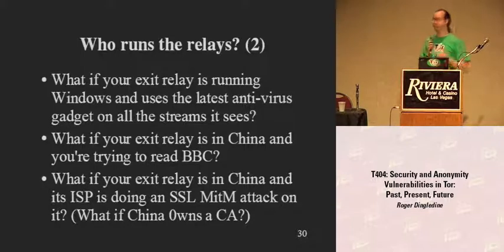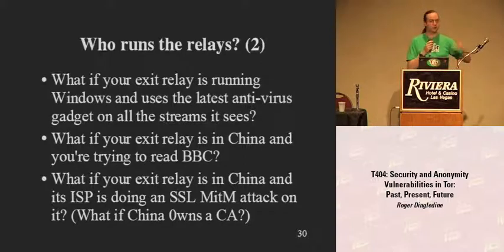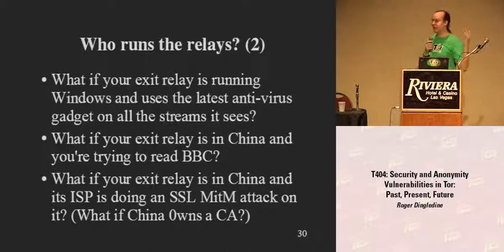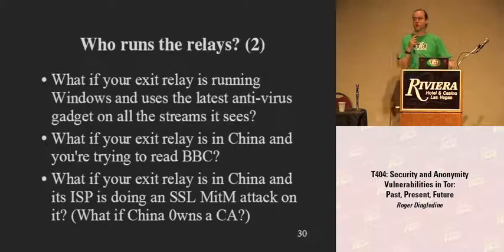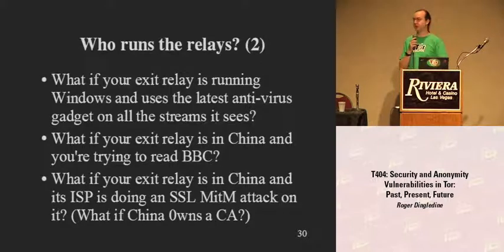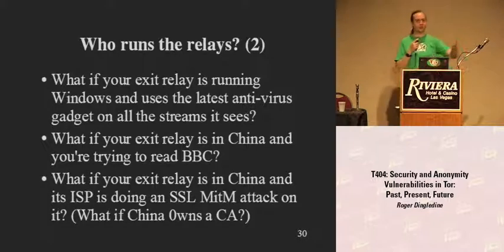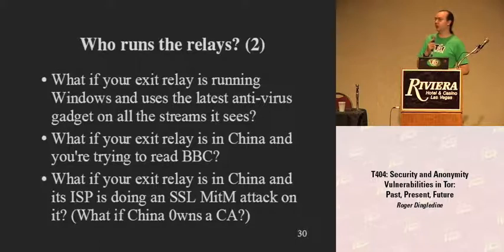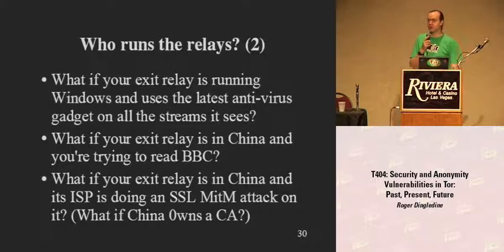I've been hearing rumors that China is looking to buy one of the roughly 200 certificate authority keys that Firefox trusts — many of which went out of business in 2000 but are still in the trusted CA list. Once they do, they'll be able to do SSL man-in-the-middle attacks and your Firefox won't pop up any warning. What happens if someone who runs an exit node gets hold of one of these official CA keys? Now they can spoof the whole SSL Internet. SSL might not be as end-to-end secure as we hope.